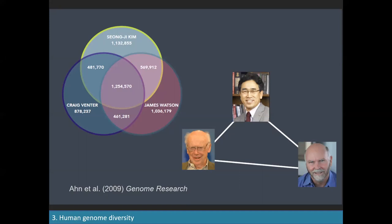Watson and Venter are Americans of clearly European origin, and Kim is Asian. In the center, there are 1,254,000 variants shared by all three. Most interestingly, Craig Venter and James Watson — the two people of European origin — share fewer variants with each other (460,000) than either of them shares with Kim: 480,000 for Venter and almost 570,000 for Watson. So from the genetic standpoint, Kim the Asian is intermediate between Watson and Venter.